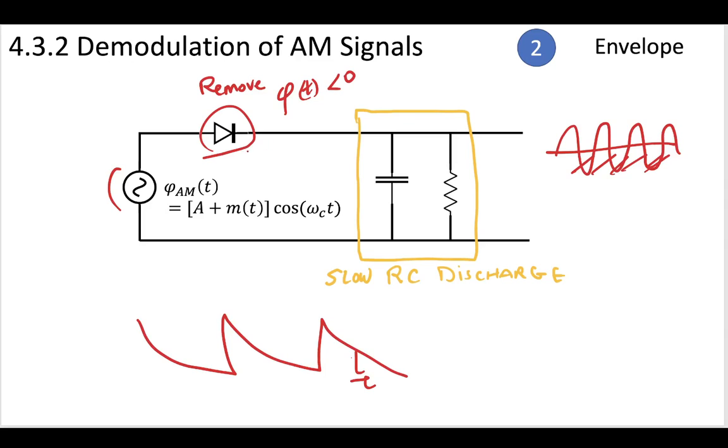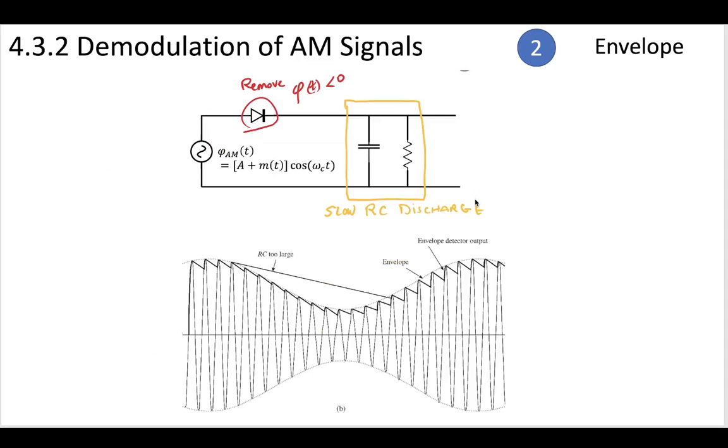So an envelope detector is first going to apply a diode, remove all that stuff on the bottom. Then it's going to have a slow RC discharge circuit. And what you'll be left with is just the envelope by itself.